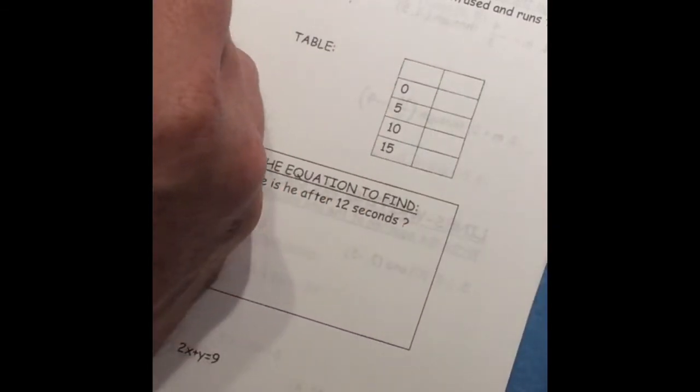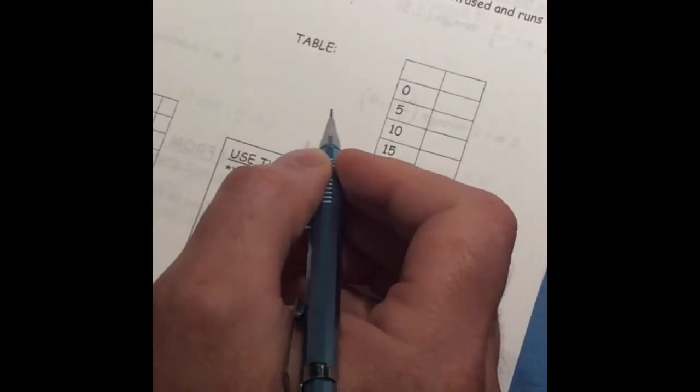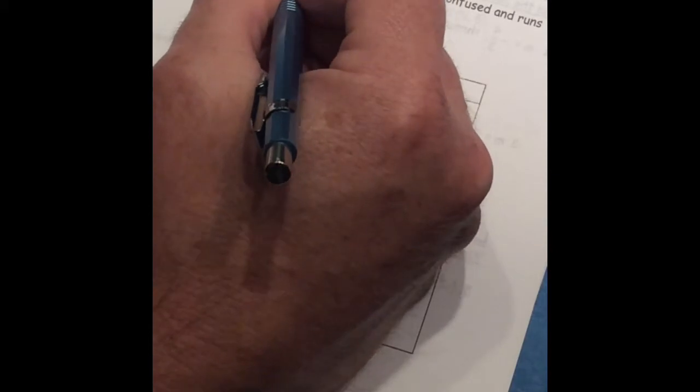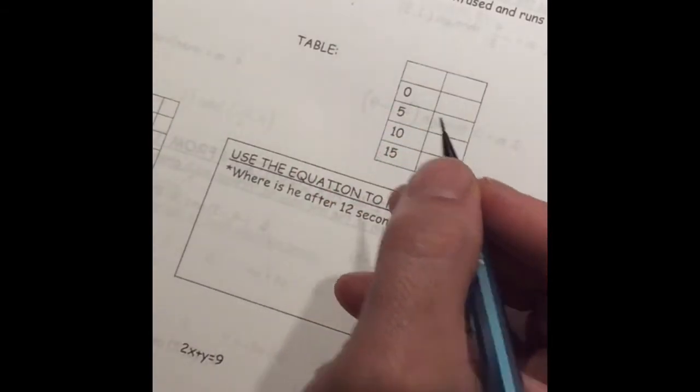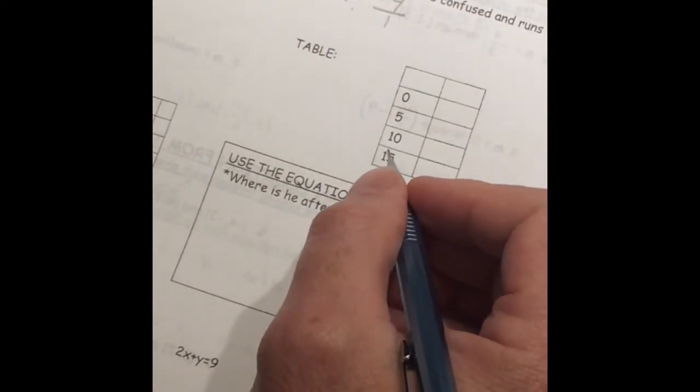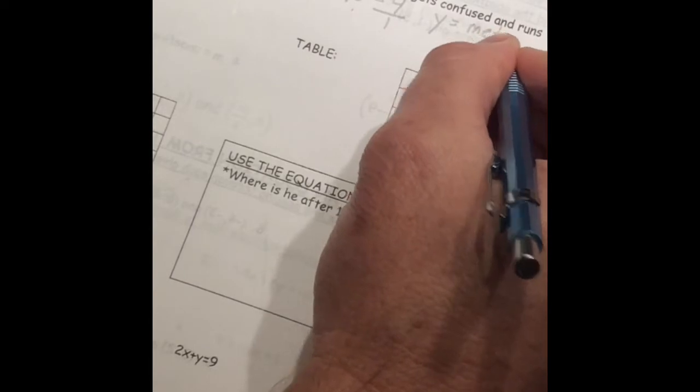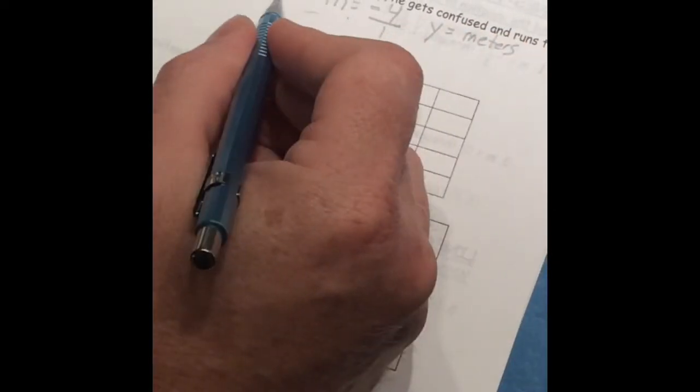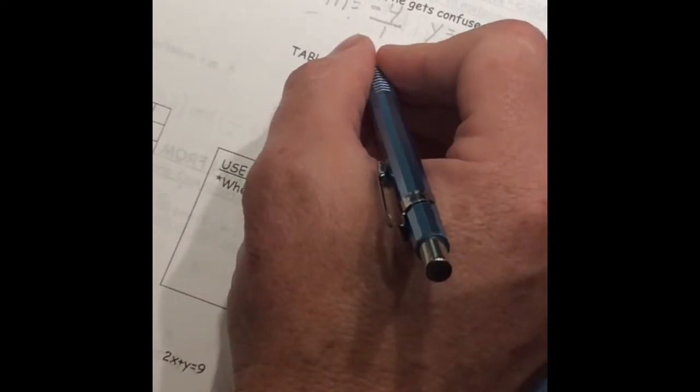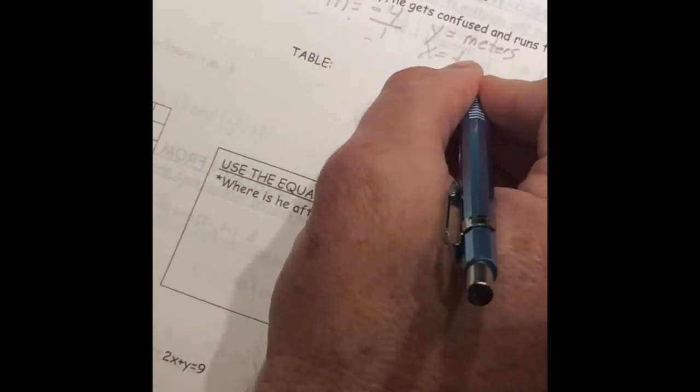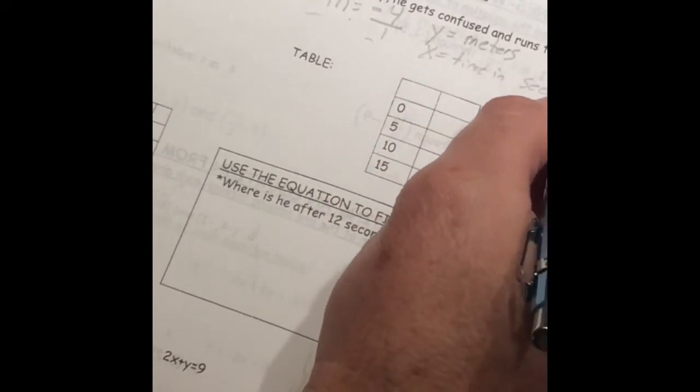All right. In a race, Charlie has a 12-meter head start. But unfortunately, he gets confused and runs the wrong way at 4 meters per second. So at the very beginning of the race, he has a 12-meter head start. There's a known point. And then every second, he goes 4 meters in the wrong direction. It means he should be my Ys, which would be how many meters. All right. He's moving. Starts at 12 meters and goes 4 meters back. And down here would be my Xs, which is time in seconds.